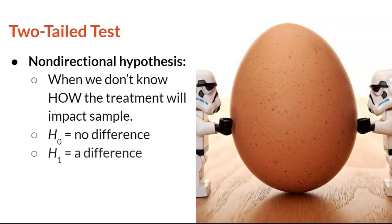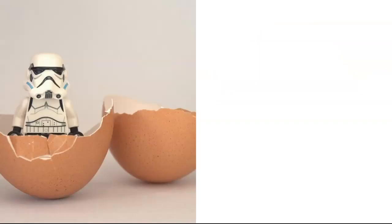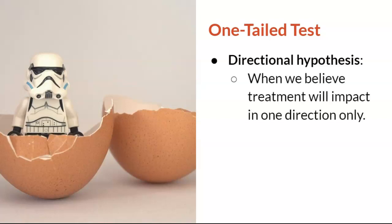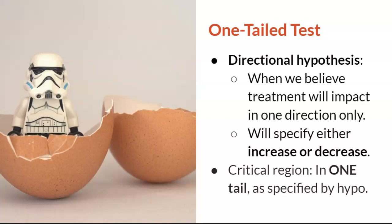The null and research hypothesis will be the same as in the previous video. The critical region for this test will be in both tails, since we do not know which direction the effect will be. On the other hand, a one-tailed test uses a directional hypothesis. The root word direction implies that we have an idea of which direction the treatment will affect the sample. The hypothesis will specify either an increase or decrease in the sample score. The critical region for this test will be in one tail, as specified by the hypotheses.